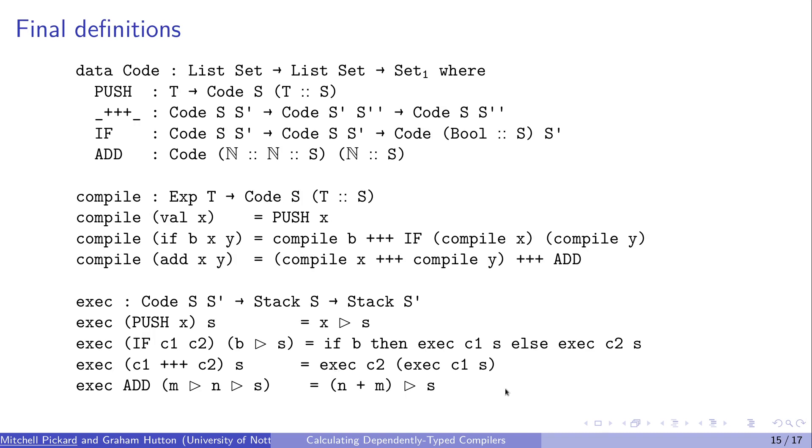Once we do that for all of the cases, we get this. So we create several different code constructors. Each of them have types that are nice and precise, thanks to the dependent types. And then we have our compiler and our execution functions.